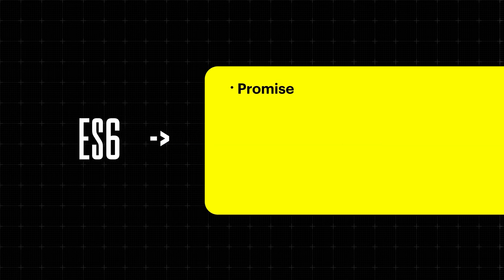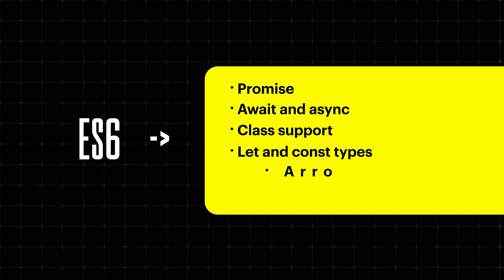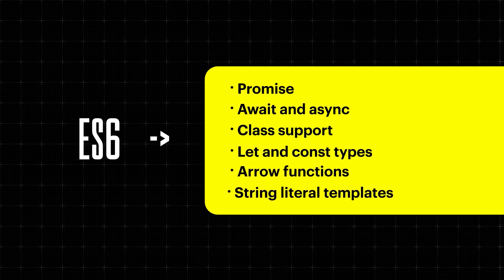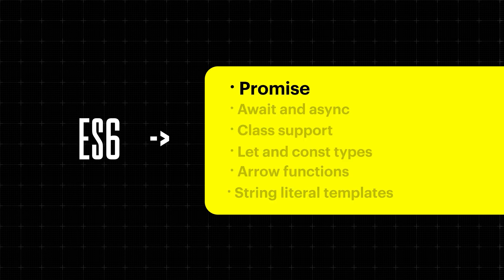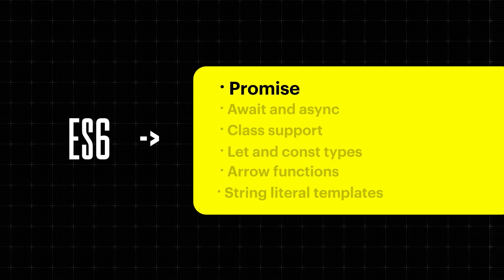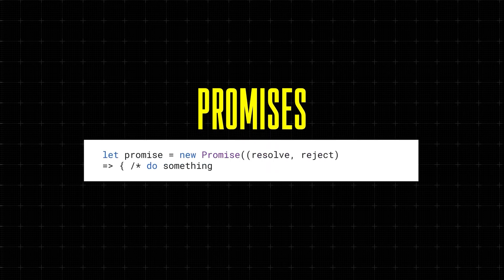In this video, we'll explore ES6 features like promise, await and async, class support, let and const types, arrow functions, and string literal templates. First up, let's discuss promises, a new feature in ES6. Promises represent a value that may not be available yet, making it easier to work with asynchronous operations like reading files or making HTTP requests. Here's an example using promise. This code creates a new promise that will eventually call either resolve if it succeeds or reject if an error occurs.